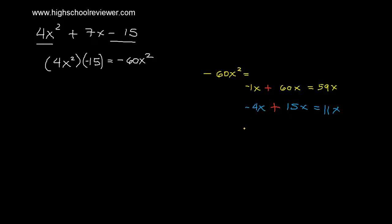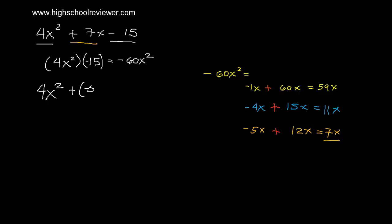Let's try negative 5x and positive 12x. Negative 5x plus 12x gives positive 7x, which is equal to our middle term. These are the factors we will use. We can rewrite the equation as 4x squared plus negative 5x plus positive 12x minus 15, combining like terms: 4x squared minus 5x, plus 12x minus 15.